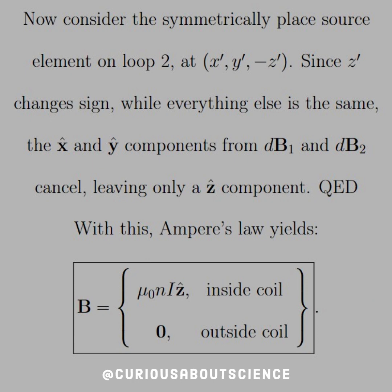So if we place the loop symmetrically down in a kind of mirror fashion, then all we're doing is changing the sign on the z-coordinate. So we end up at a point (x', y', -z'). And since that's the only thing that changes, we can flip the signs on them for dB2.